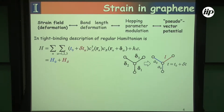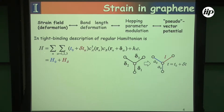The pseudo-vector potential changes our description of our tight-binding Hamiltonian. This is our normal tight-binding Hamiltonian with our normal hopping term, but now we also have a strained hopping term, creation-annihilation operators, and the Hermitian conjugate. We can break it up into the bare and strained contribution of the Hamiltonian, where this term is simply the change in our lattice vector.